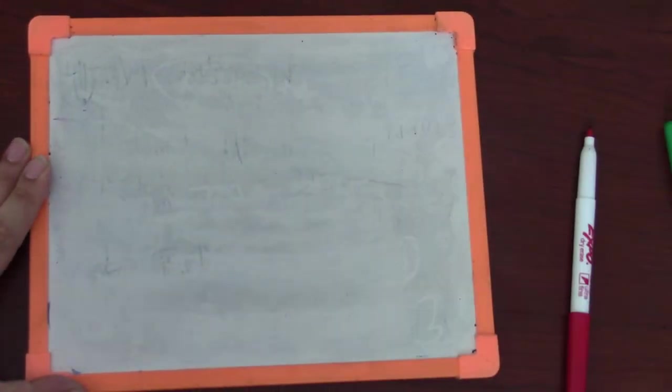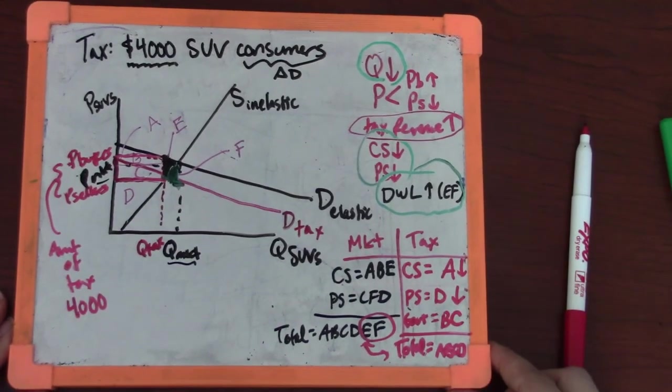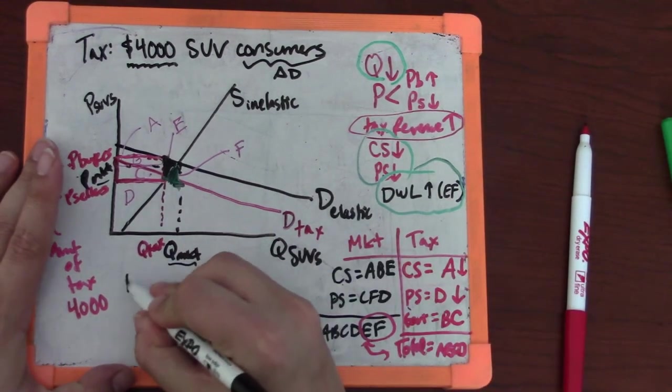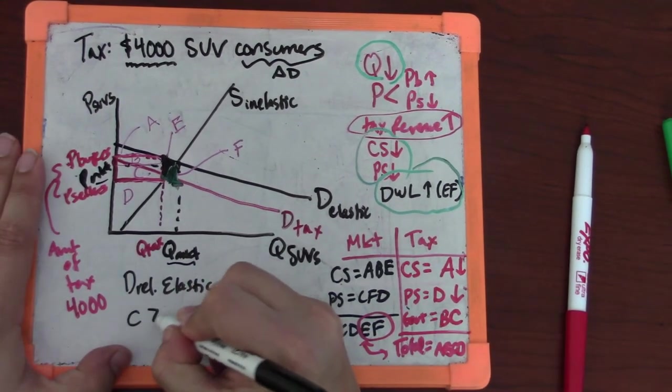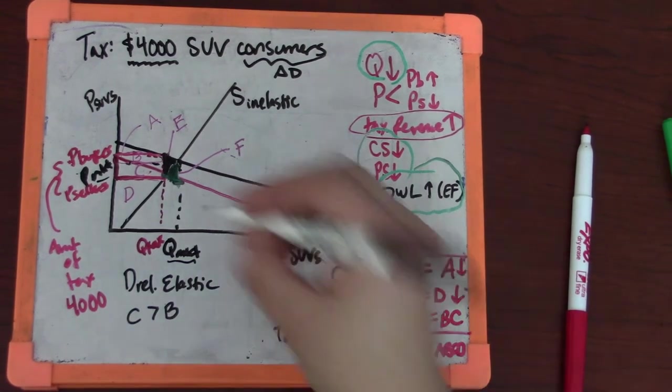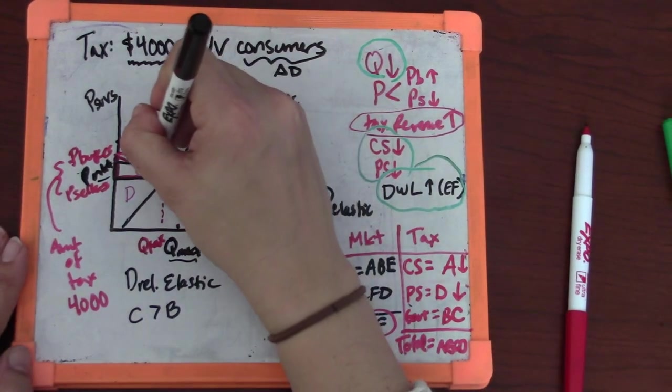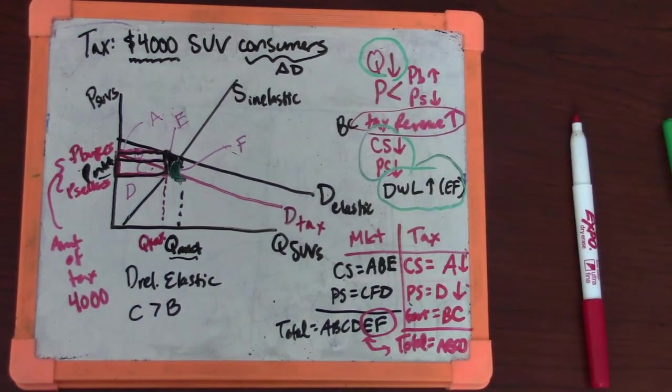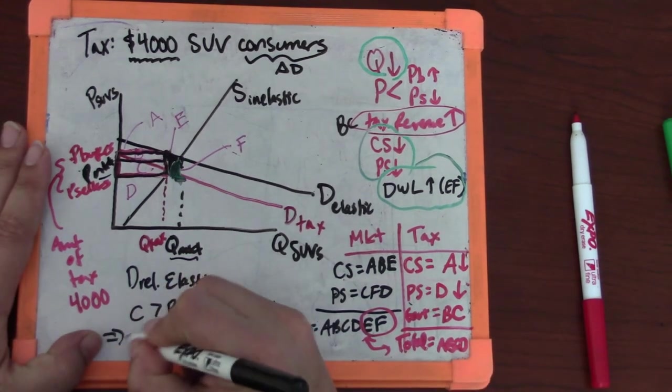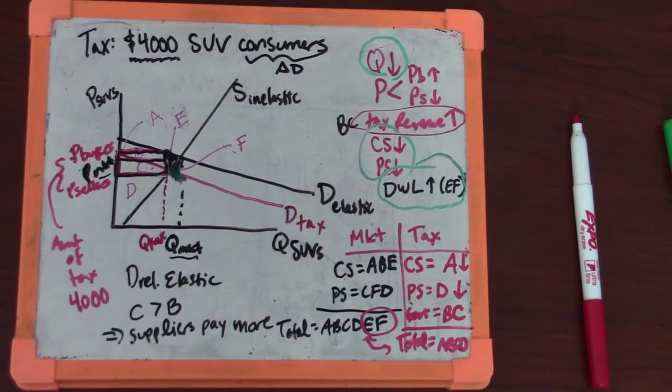That's tax. Sorry that the graph ended up being so small. Let's talk about subsidy. I forgot to mention the role of elasticity. Notice that in our graph, demand is relatively elastic. That means that C is bigger than B. This area that is paid by the firms in the form of lower prices is bigger than this chunk that's paid by consumers on top.